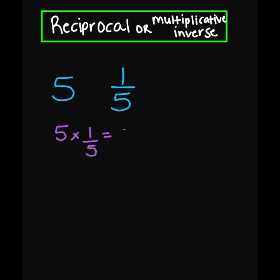Numerator: 5 times 1 is 5. My denominator: 1 times 5 is also going to equal 5. 5 divided by 5 equals 1. So we know that 1 over 5 is the correct answer.